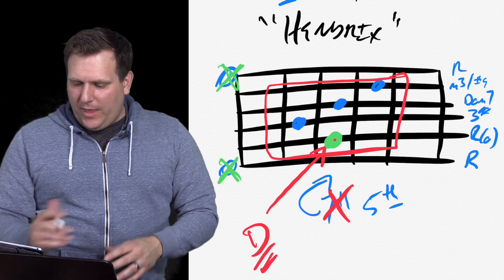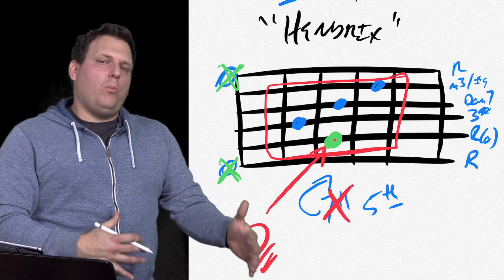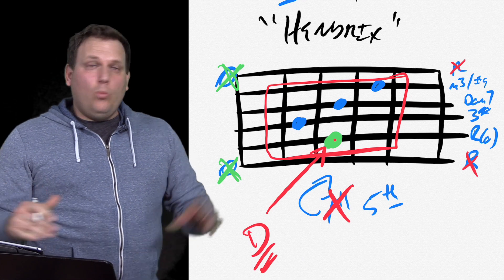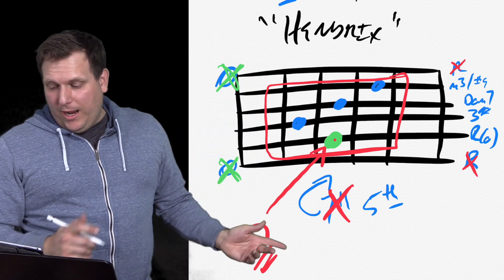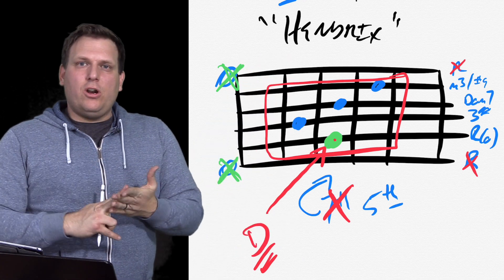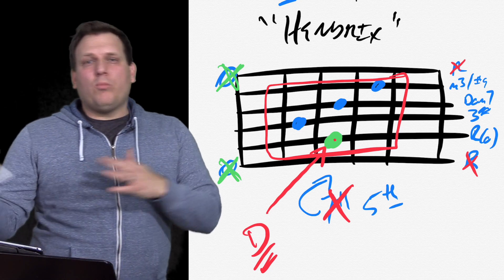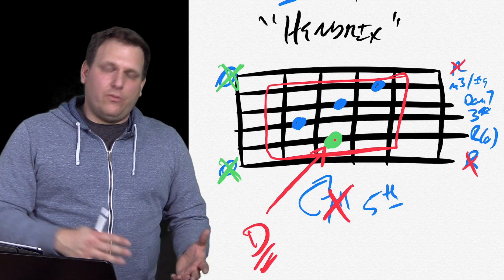And because that note is the root, this now becomes a D seven sharp nine. And the reason for that is even though we're not playing the two open E strings, so you're getting rid of this root and this root with those four notes, you're still playing. You still have a root, the third, the dominant seven and the sharp nine.